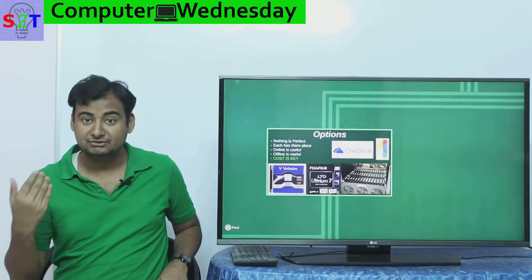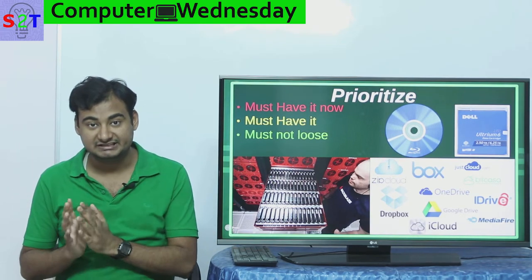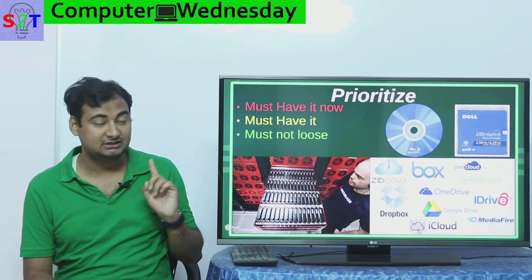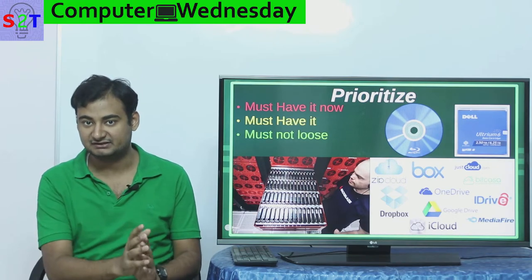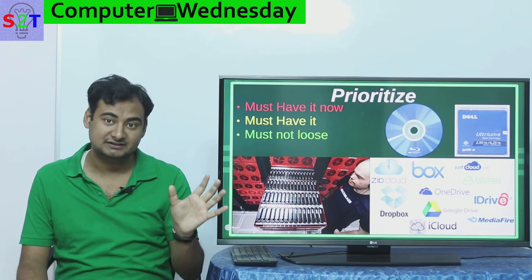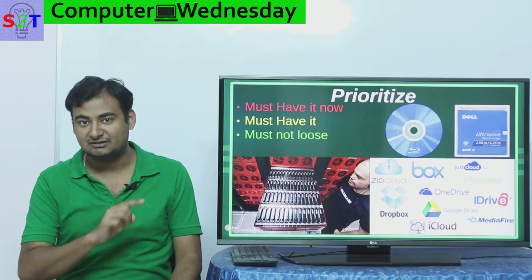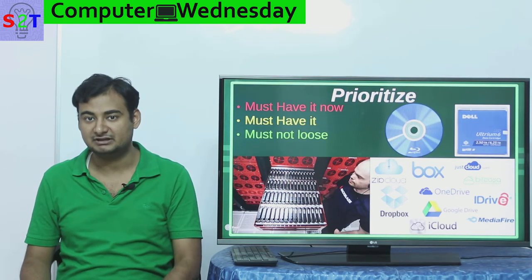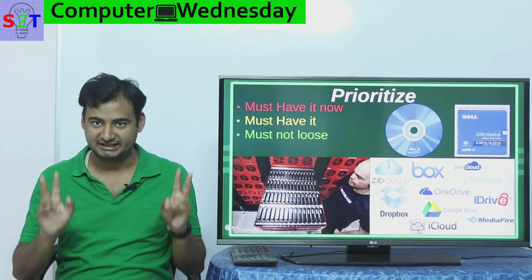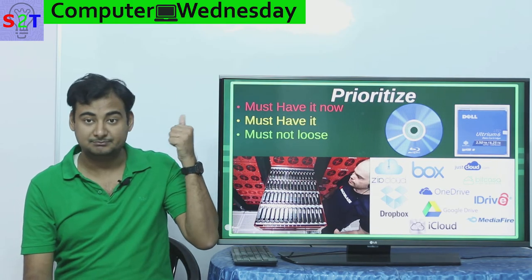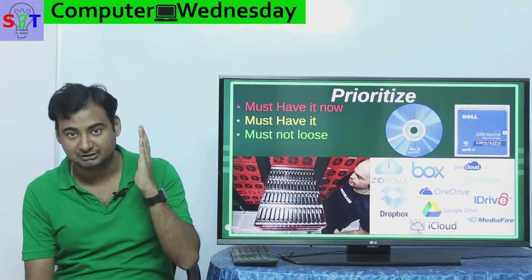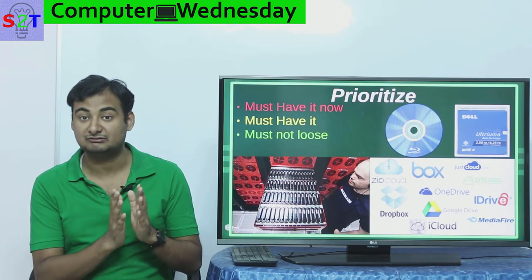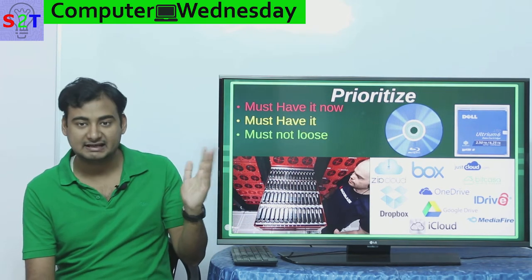Now, how do you know which data to back up? It's a simple three-tier system. The first tier is 'must have it now.' This requires a mirror server where all your files are cloned to a secondary server whose administrative rights are locked — you cannot delete files from it. If you accidentally delete something, your IT department can recover it via a ticket. This is essential for time-sensitive files where people are actively working and being paid.